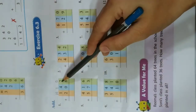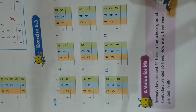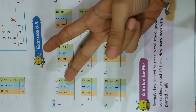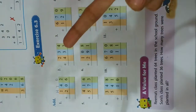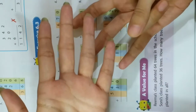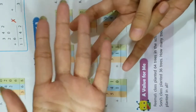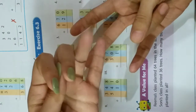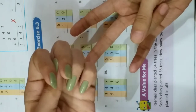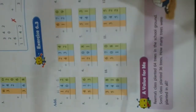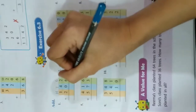2 is given on top, so take out 2 fingers. 6 is given below, so take out 6 fingers. Let's count: 1, 2, 3, 4, 5, 6, 7, 8. You get 8, so write 8 over here.